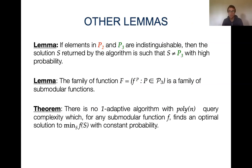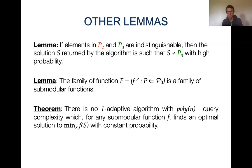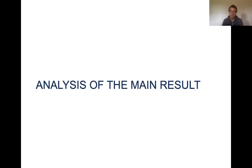To complete the proof we need two more lemmas. First, we need to show that if these elements are indistinguishable, then the solution reached by the algorithm will differ from P3 with high probability. We also need to show that this family of functions is a family of submodular functions. Combining these three lemmas, we get that there is no one-adaptive algorithm for solving submodular minimization with constant probability.